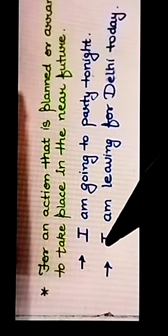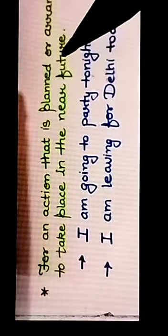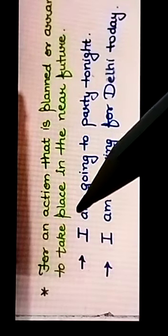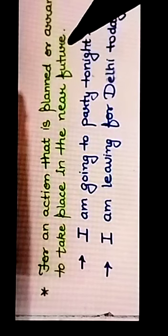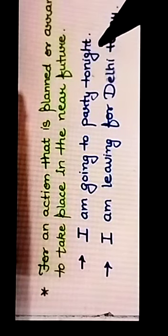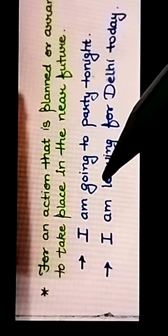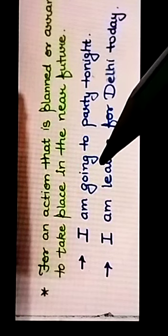Present continuous tense is also used for an action that is planned or arranged to take place in the near future. Like I am going to party tonight. It is a planning here. See I have used continuous tense with ing form of the verb.